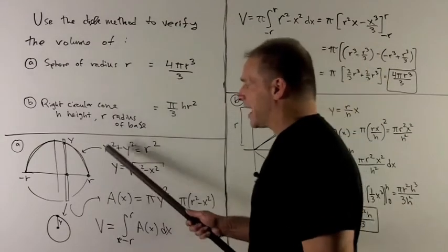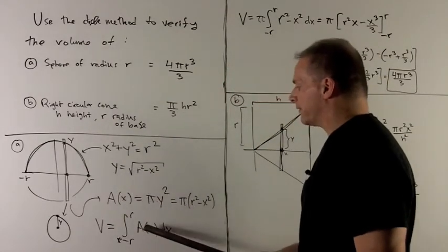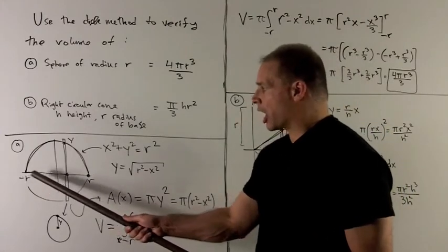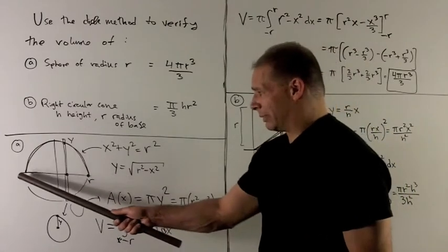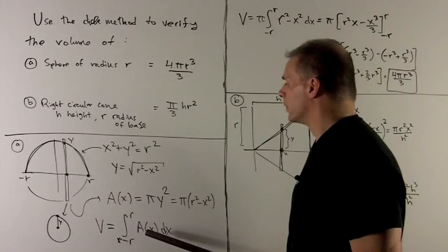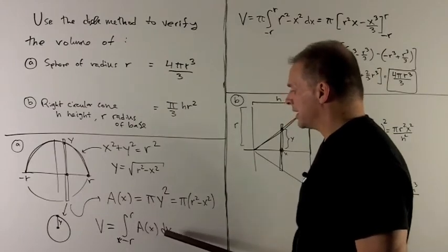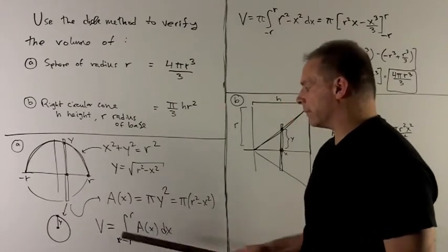If I want the entire volume, I'm going to integrate this function from minus r to r, which will get me every disk of area A(x) dx. So that's my volume formula.